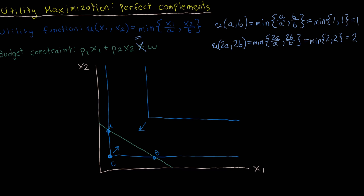By combining these two perspectives, we come to the realization that our solution must be on the indifference curve that has a kink that just touches the budget line. We can't do any better by choosing an indifference curve above this one because any bundle there would not be affordable. And it can't be on an indifference curve below and to the left, nor can it be any bundle other than this one on this indifference curve, since none of those are affordable. So this is indeed the bundle corresponding to the solution of the utility maximization problem.